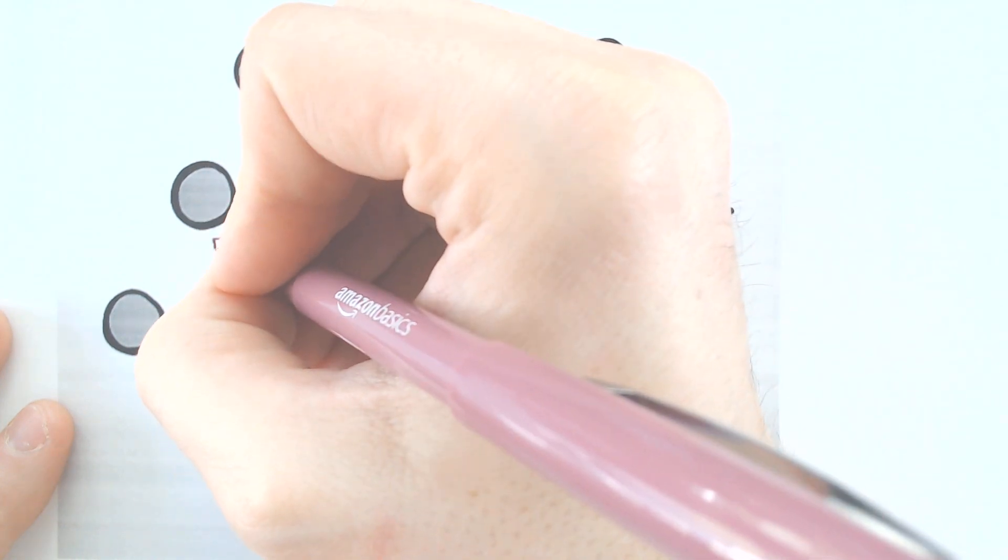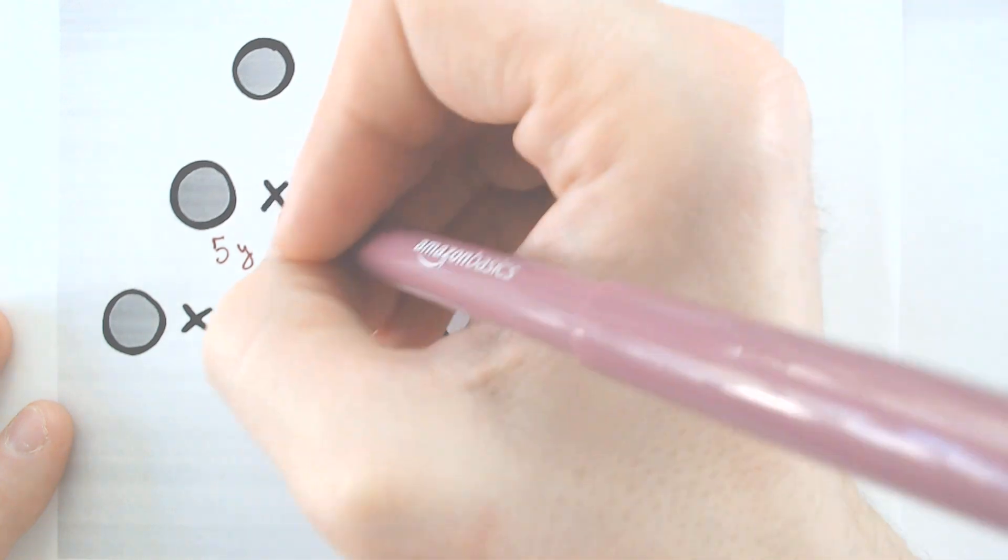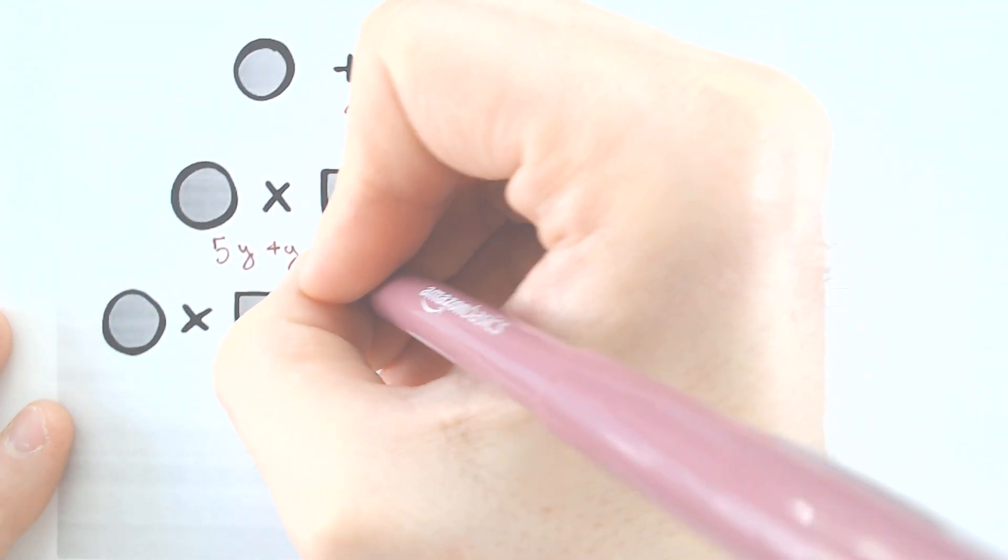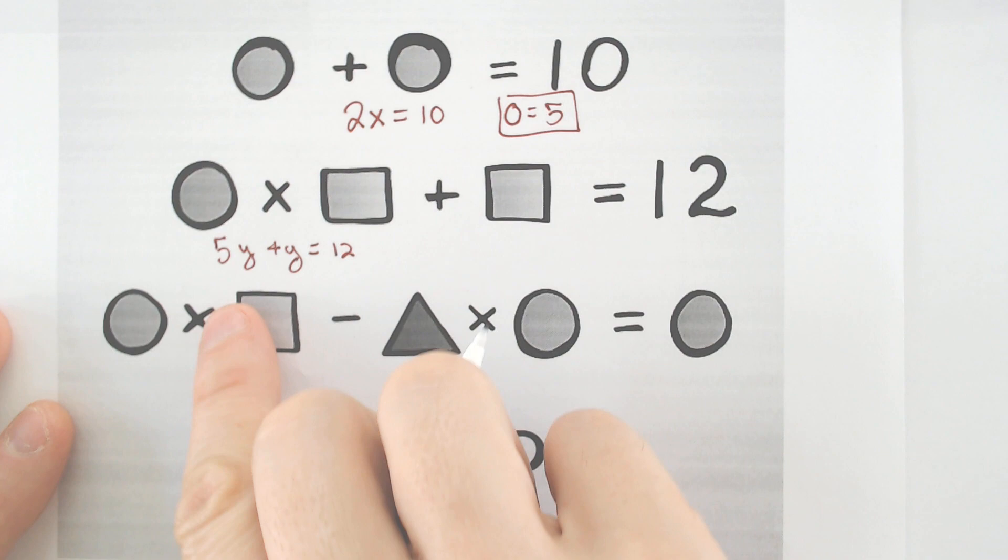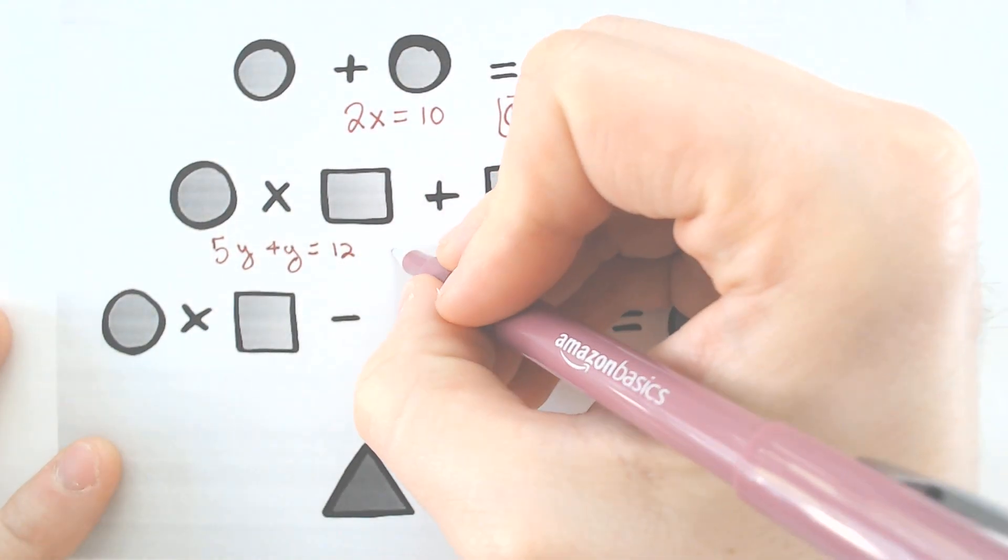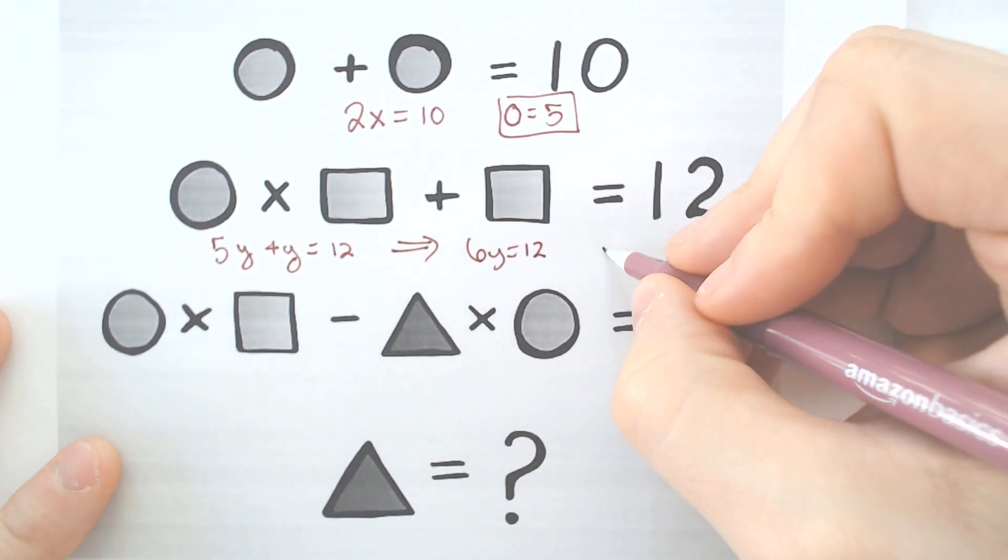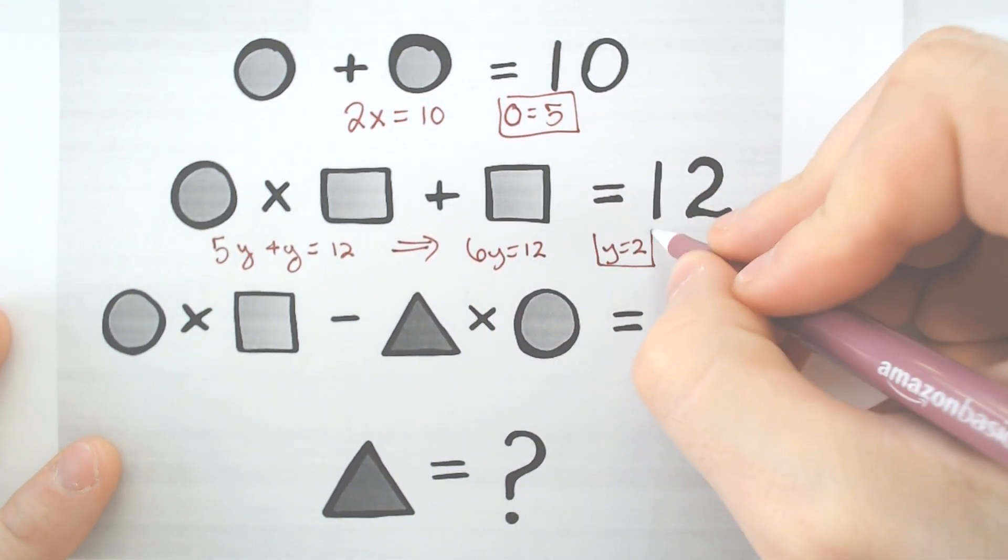Would be another y, would equal 12. And 5y plus y equaling 12 ends up being 6y is equal to 12. Which when we divide, we get y is equal to 2.